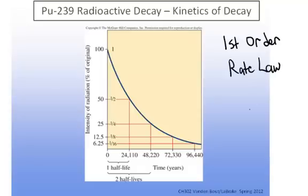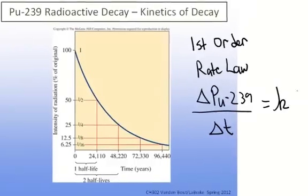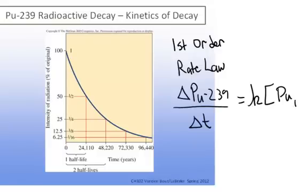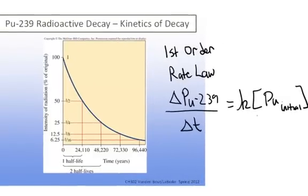What that means is the rate of change, the rate of change of the isotope, in this case plutonium-239, with time is going to be equal to some constant k times the initial amount of the plutonium isotope. And so what that means is the change is dependent on the amount of the plutonium that is present.